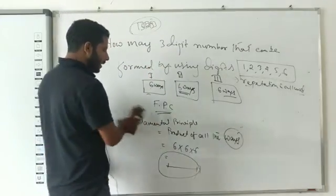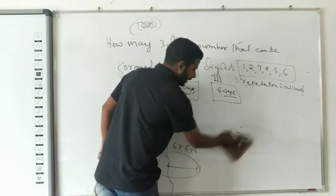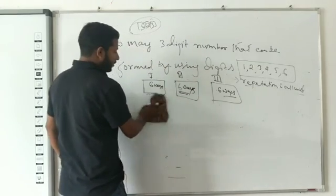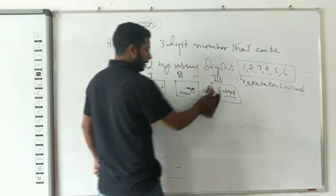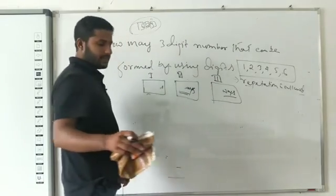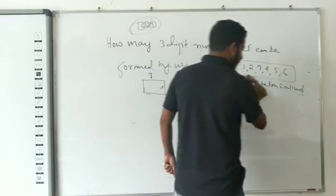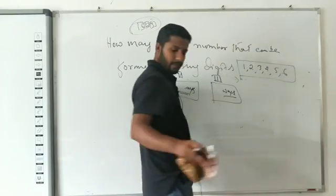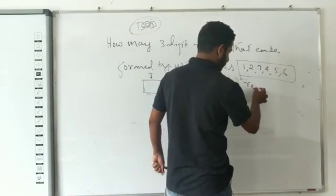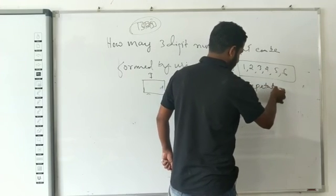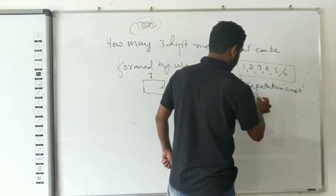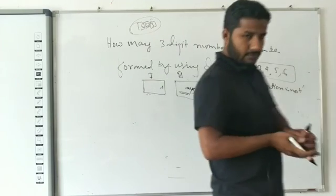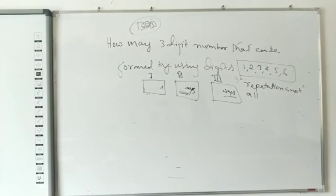Now I am going to modify the question — suppose repetition is not allowed. When repetition is not allowed, the choices for each subsequent position decrease by one, and we solve it differently.